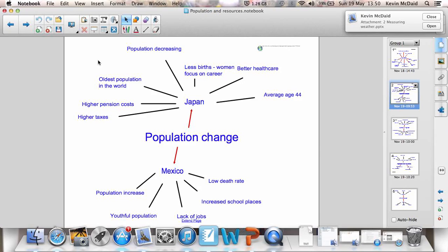And basically, people are living longer, for instance, because of things like better health care. Mexico, on the other hand, is the opposite. Very low population, very youthful population, which means there's a lack of jobs and there's increased numbers of people in school. The population is increasing quite quickly. There's a very low death rate. So we've got two examples there of countries with their different changes in population.